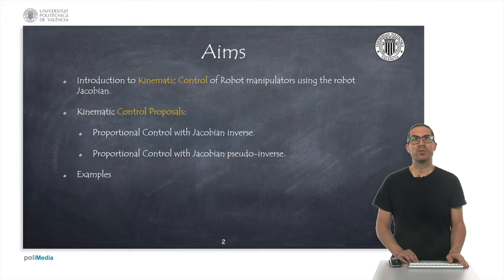The aims of the presentation are to introduce the kinematic control of robot manipulators through the use of their Jacobian matrix. We will derive expressions to justify the proposed controller, first using the inverse of the Jacobian matrix and then using the pseudo-inverse, particularly useful for redundant robots.